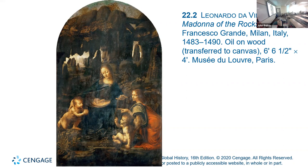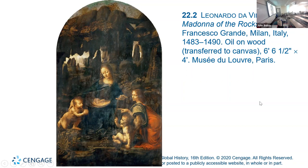That figure is John the Baptist. Some biblical scholars, especially of the time, believed that John the Baptist and Christ were cousins — that John the Baptist was born to the sister of Mary, and they were close together in age. This is the baby John the Baptist, and this is an angel there as guardian, pointing to John the Baptist, and Mary with her blessing too.